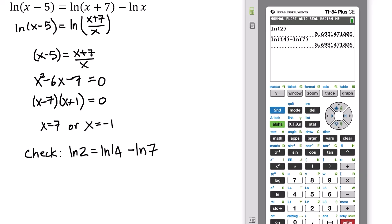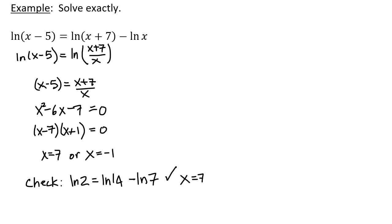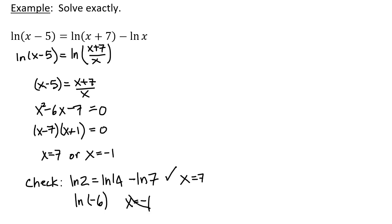We must check both solutions. For x equals 7: ln 2 equals ln 14 minus ln 7 — yes, that is true, so x equals 7 is a solution. For x equals negative 1: the first term becomes ln(negative 1 minus 5) or ln(negative 6), which is undefined because the argument of a log must be positive. Negative 6 is not in the domain, so x equals negative 1 is not part of the solution set. The solution set contains only x equals 7.